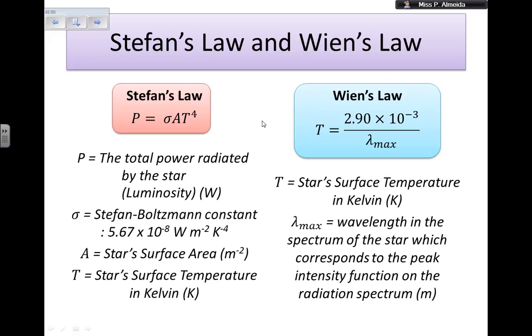The sigma is a constant, is the Stefan-Boltzmann constant, and is equal to 5.67 times 10 to the power of minus 8 watts per meter squared kelvin to the power of minus 4.